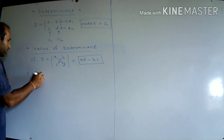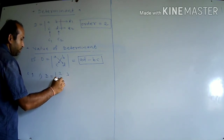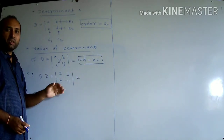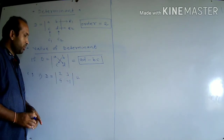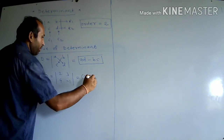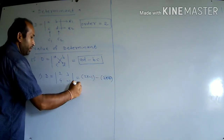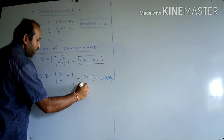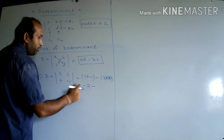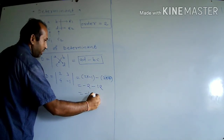See the example: suppose D equals the determinant with elements 2, 3, 4, minus 1. Using the formula AD minus BC, take the product of diagonal elements minus the product of non-diagonal elements: 2 into minus 1 minus 3 into 4. That gives minus 2 minus 12, which equals minus 14.